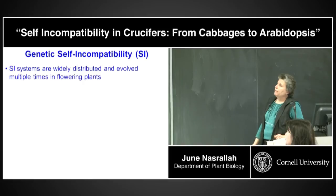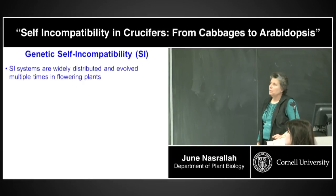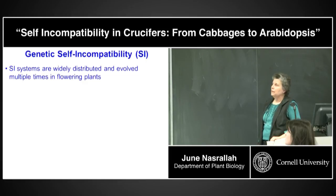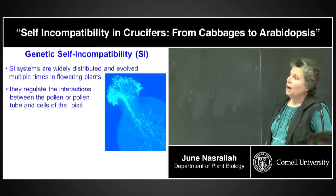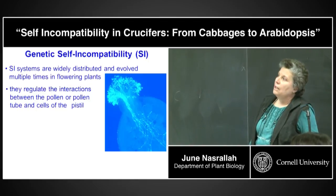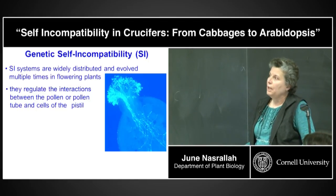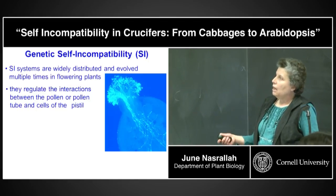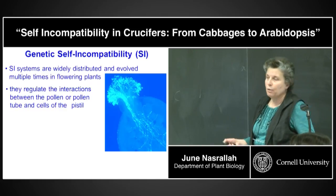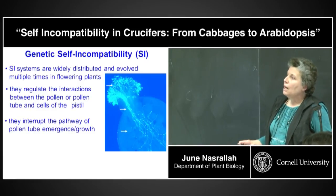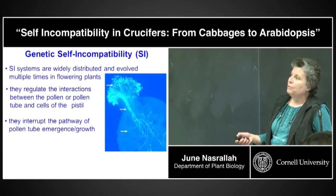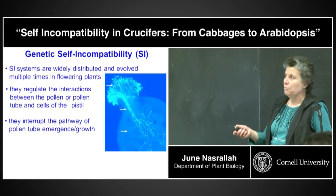Self-incompatibility systems are widely distributed among flowering plants and they evolved independently multiple times. We know this because molecular analysis shows that different genes are involved. These systems regulate the interactions between the pollen or pollen tube with cells that line the pistil — that line the path of pollen tube growth — and they interrupt the pathway of pollen tube emergence and growth.